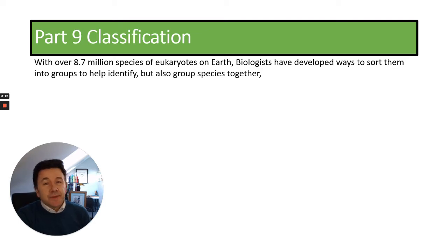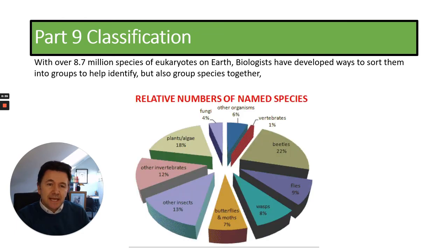There are many species on earth, and biologists have developed ways of grouping these together to help identify them but also to show how species are related. If you look at the number of different types of groups and families, there are many species of plants and animals on earth, particularly the invertebrates. Two-thirds of the number of species on earth are invertebrates, and vertebrates only make up one percent, and that includes us as mammals.